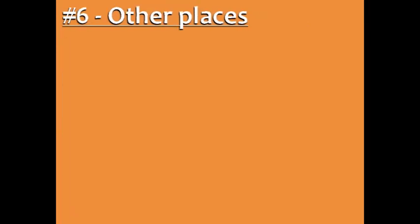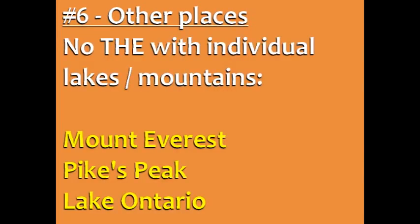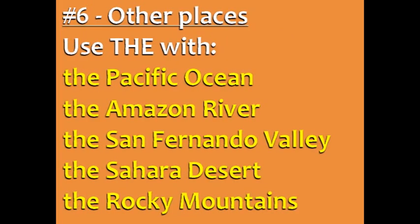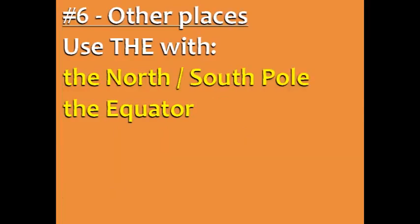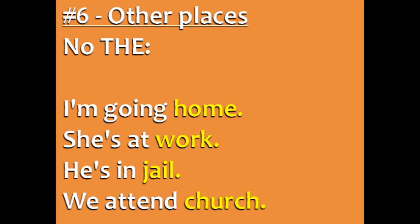With other places, it's a little tricky. Don't use the with individual lakes or mountains, like Mount Everest, Pikes Peak, or Lake Ontario. Use the with oceans, rivers, valleys, deserts, and mountain ranges — that's groups of mountains — for example, the Pacific Ocean, the Amazon River, the San Fernando Valley, the Sahara Desert, and the Rocky Mountains, as well as with specific points on the globe, like the North Pole, the South Pole, and the equator.